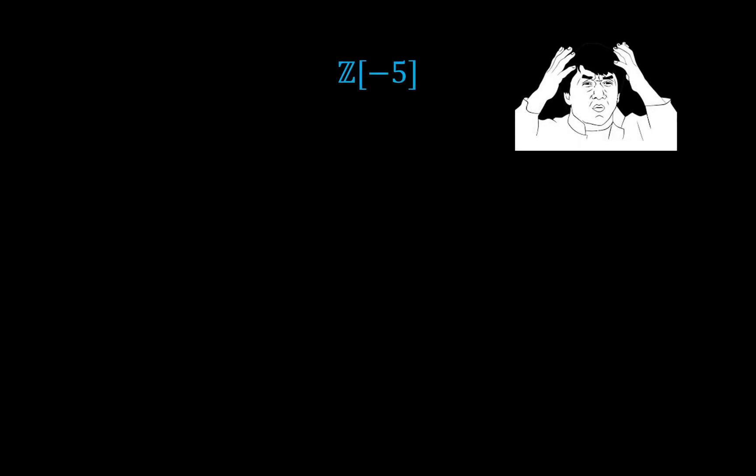This property of unique factorization should not be taken for granted. Let's look at something funky, like the set of integers with square root of -5 appended. Basically, this is the set of all numbers of the form a + b√(-5), where a and b are integers. You can check that if you add, subtract, or multiply any two such numbers, you actually stay within this form.